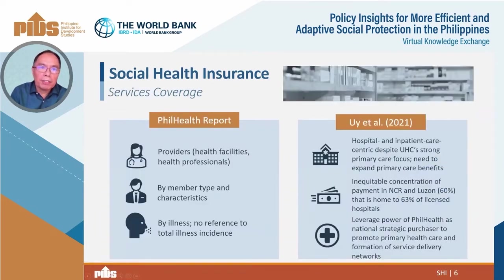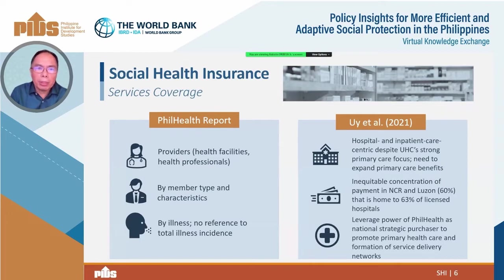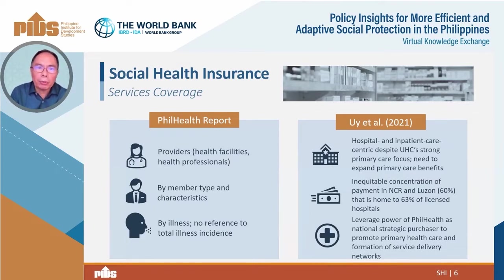Turning to the service coverage dimension, PhilHealth reports access by providers including health facilities and professionals, data on member types by select characteristics, and access by illness. However, these reports do not include an access proportion relative to total illness incidents, which would allow an analyst to compute an illness-level service coverage rate.